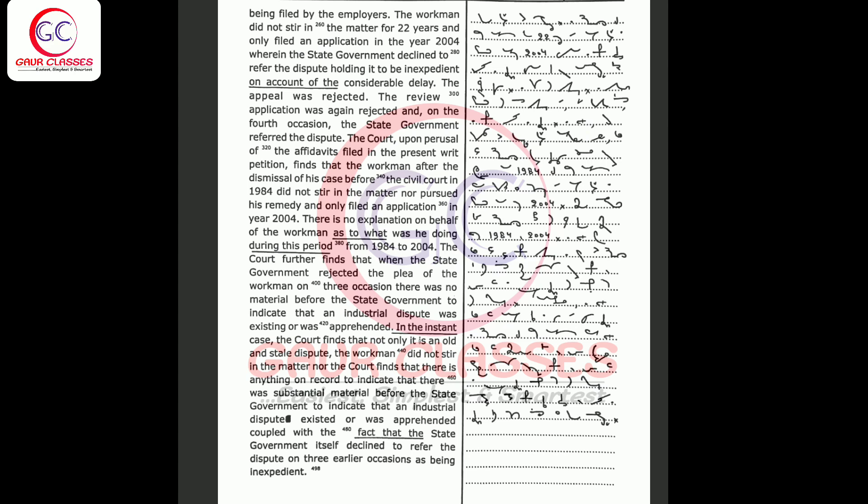There is no explanation on behalf of the workmen as to what was he doing during this period from 1984 to 2004. The Court further finds that when the State Government rejected the plea of the workmen on three occasions, there was no material before the State Government to indicate that an industrial dispute was existing or was apprehended.